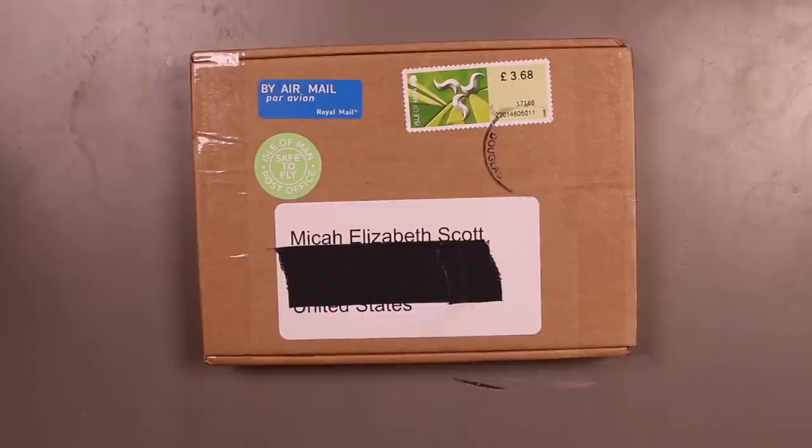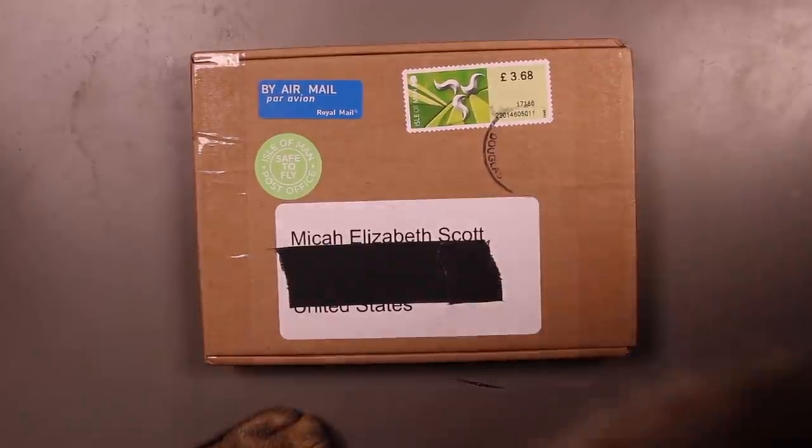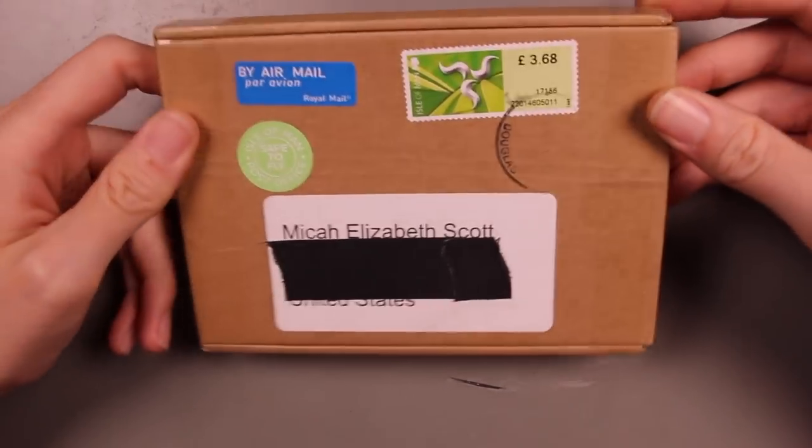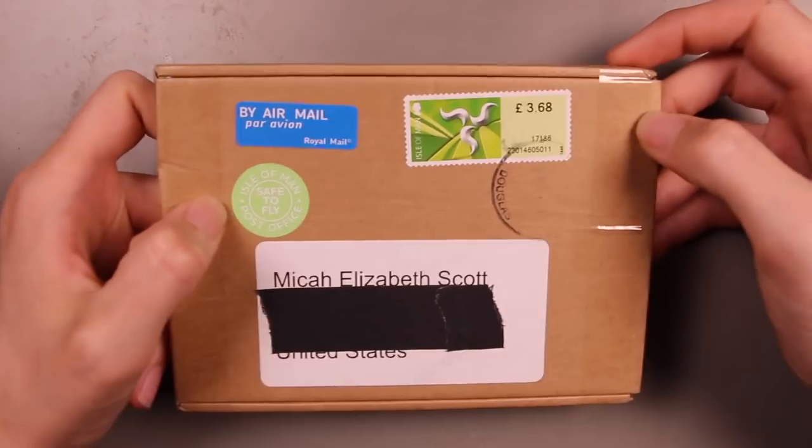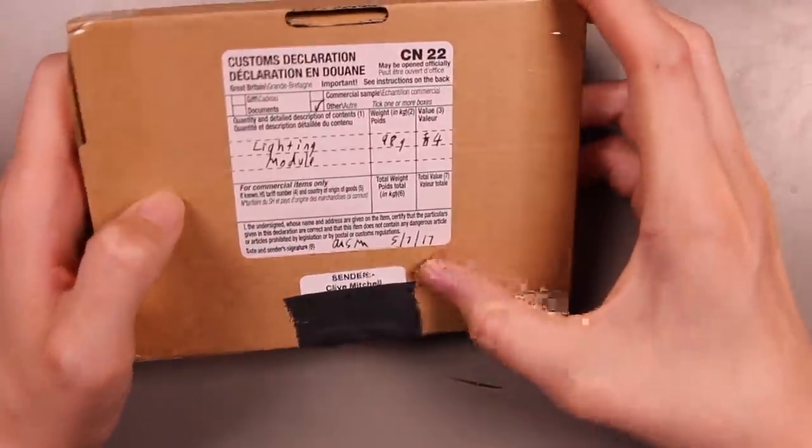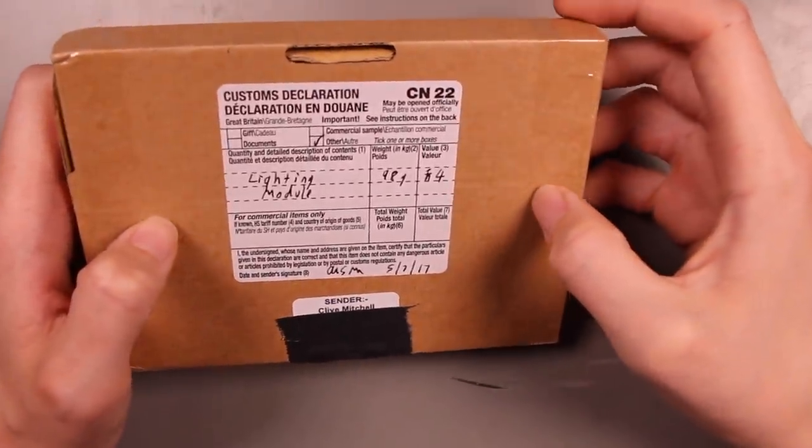Are you coming over here, Tuco? I guess he is. So this is what we've got today. This is a package from the Isle of Man. Some people might know what that might mean. Sender: Clive Mitchell. Lighting module. So yeah.